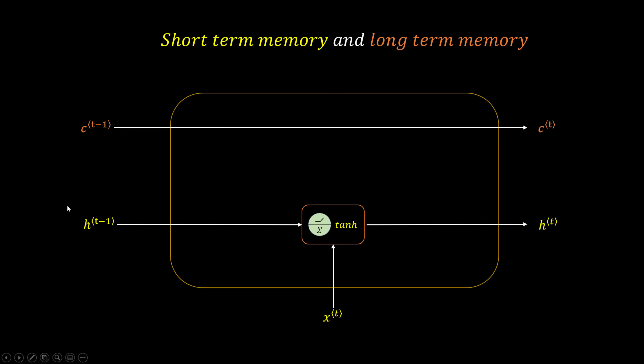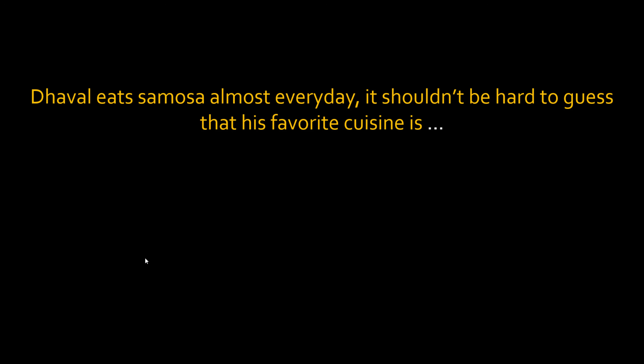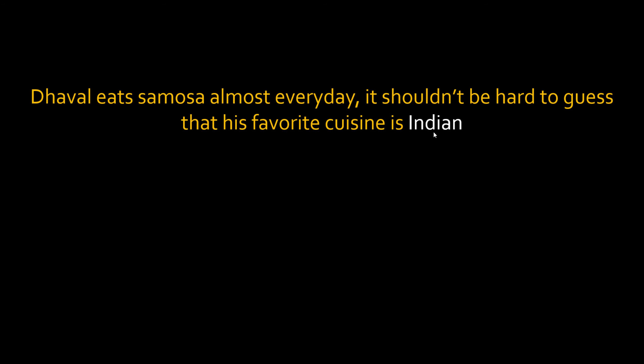In LSTM, we are going to introduce a new cell state for long-term memory. Now let's see how exactly this works with one more example. I love eating samosa, by the way. So I have one more sentence for you to autocomplete — can you tell me what would you put here? Well, obviously Indian. Samosa is an Indian cuisine, so you will say his favorite cuisine is Indian. Take a pause and think: when you are processing this sentence as a human, which words told you this will be an Indian cuisine?